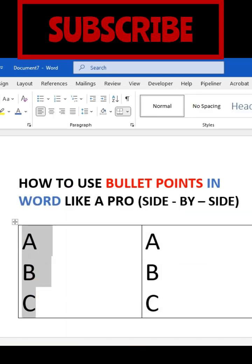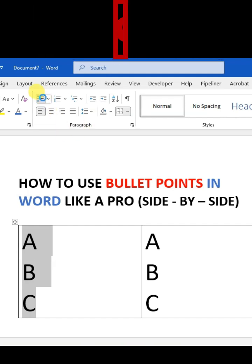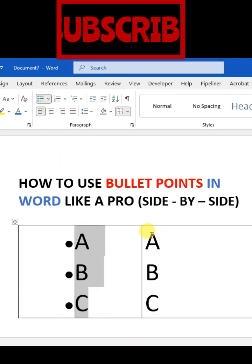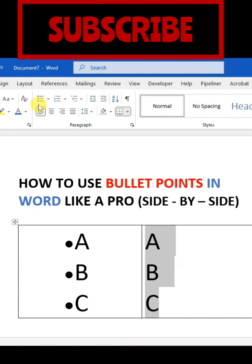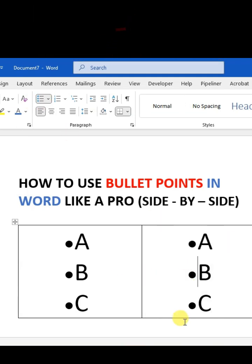Then I select the first list, go to the Home tab, in the Paragraph group have a Bullets option. Just click on the bullets and you can see the bullets is added. Same for the second list: select the list, go to the Home tab and click on the bullet. You can see the second list bullets also added.